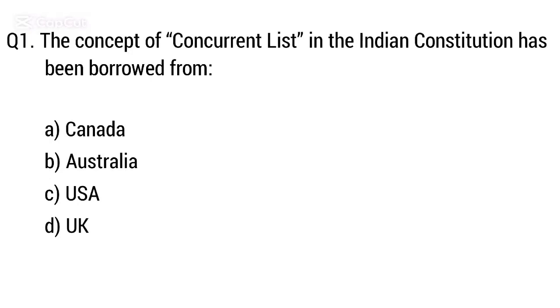Question 1: The concept of concurrent list in the Indian Constitution has been borrowed from? The right answer is option B: Australia.